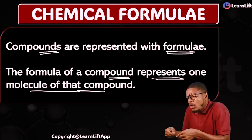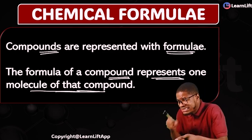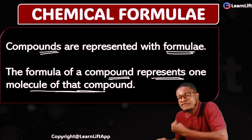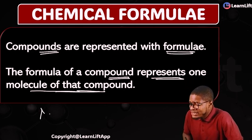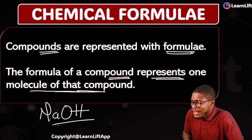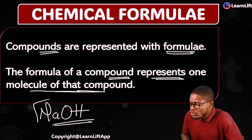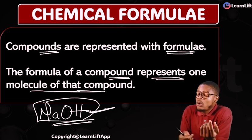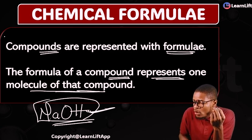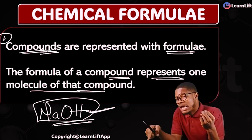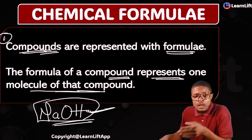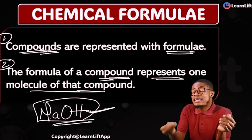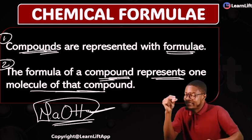The symbol of an element represents one atom of that element, but the formula of a compound represents one molecule of that compound. For example, NaOH — sodium hydroxide — is a compound, and this formula represents one molecule of the compound. So: compounds are represented with formulas; elements are represented with symbols. The formula represents one molecule; the symbol represents one atom.